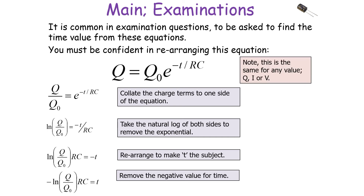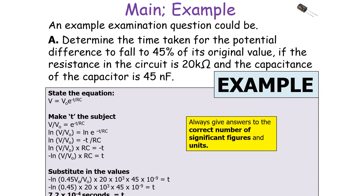Note this rearrangement is the same whether the variable is Q, I, or V. An example question: determine the time taken for the potential difference to fall to 45% of its original value if the resistance is 20 kΩ and the capacitance is 45 nF. State the equation V equals V0 E to the power minus T over RC, make T the subject, then substitute: V becomes 0.45 and V0 becomes 1, R equals 20 × 10³, C equals 45 × 10⁻⁹. Working through gives T equals 7.2 × 10⁻⁴ seconds.